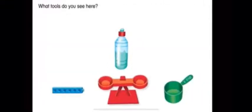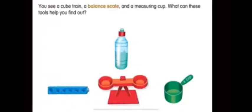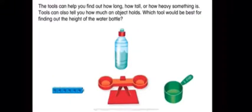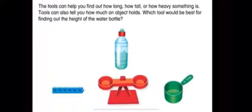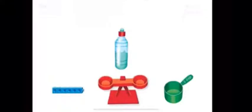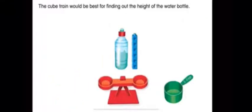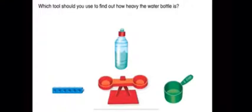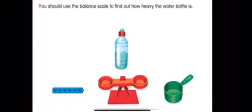What tools do you see here? You see a cube train, a balance scale, and a measuring cup. These tools can help you find out how long, how tall, or how heavy something is, and also how much an object holds. Which tool would be best for finding out the height of the water bottle? The cube train would be best for finding out the height of the water bottle.